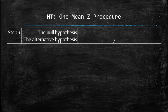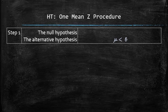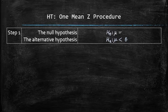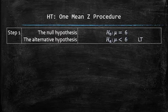Since our claim mu less than 6 is in the form of an inequality, we are going to set it up as an alternative hypothesis. Therefore, the null hypothesis, which is always in the form of an equation, must be mu equals 6. So the test is left-tailed. Step 1 is complete.